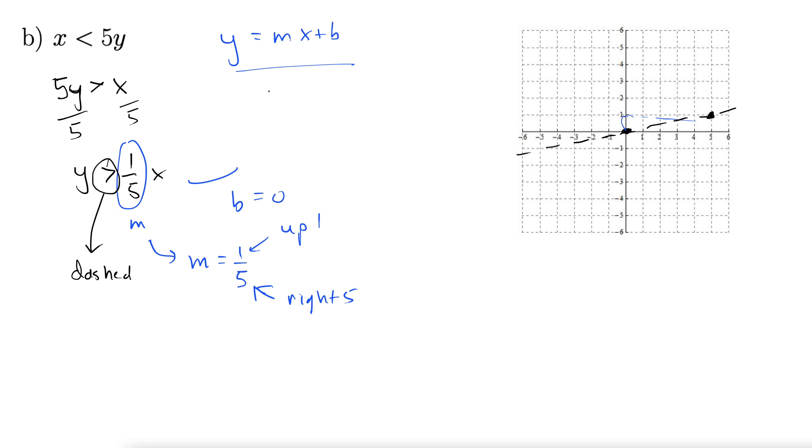And then, since we're in the form y equals mx plus b, once you're in this form, greater than means shade up, and this is y greater than 1 fifth x. So that tells us that we're shading up. So shading up above the line like so. This whole region gets shaded. There we go.